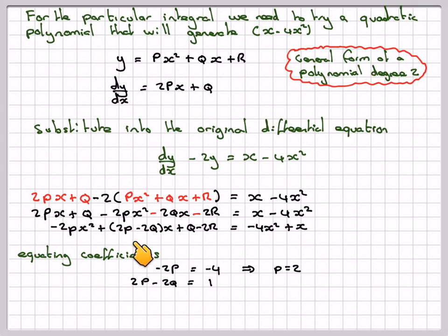Equating the coefficients here, 2p minus 2q will be equal to 1. 2 times 2, because we've already got p, minus 2q is equal to 1. Therefore, 2q will be equal to 3. q will be 3 over 2.